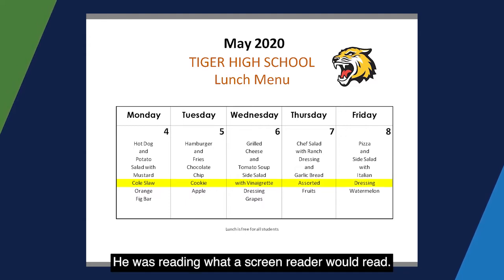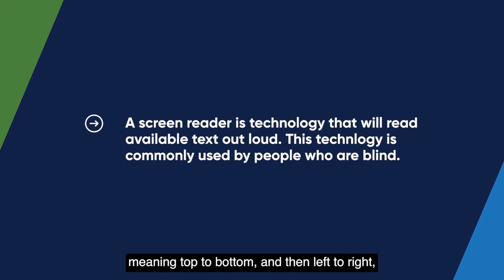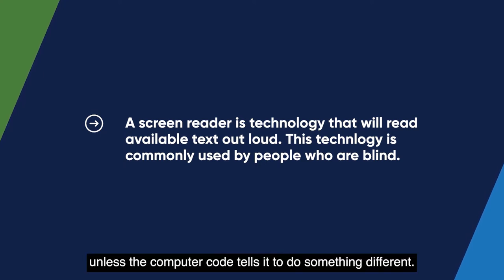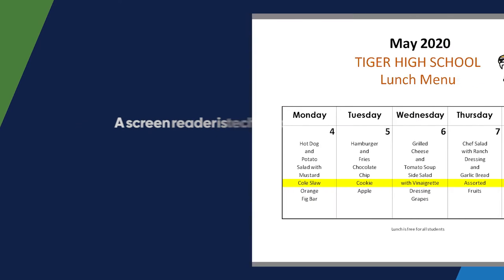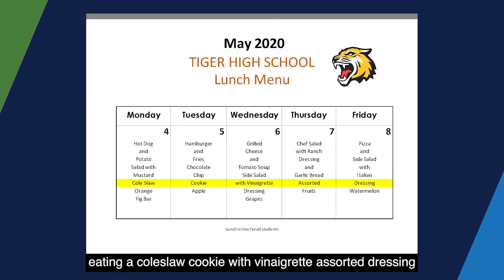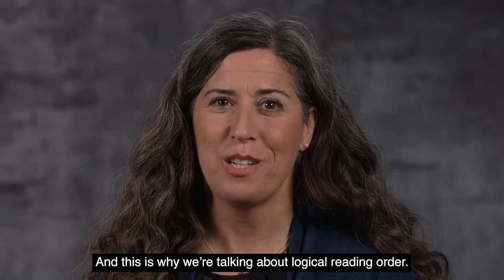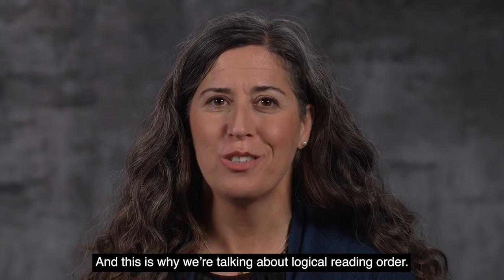He was reading what a screen reader would read. A screen reader uses standard reading conventions, meaning top to bottom and then left to right, unless the computer code tells it to do something different. That's why David is talking about eating a coleslaw cookie with vinaigrette assorted dressing, because that's the information the screen reader is telling him. And this is why we're talking about logical reading order.